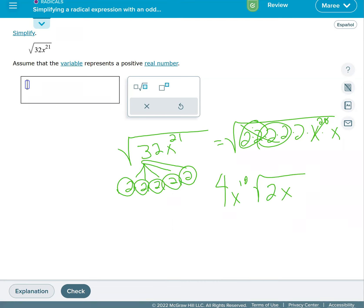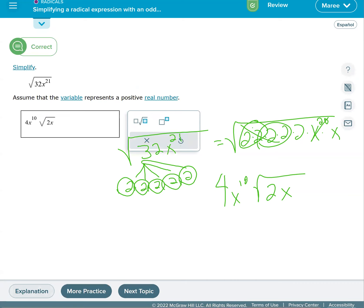So I'm going to go ahead and put four x to the 10th power. Oops, not 19th, 10th. Then I'm going to do the square root of what was it? Two x. And we'll go ahead and end the lesson there for reals.